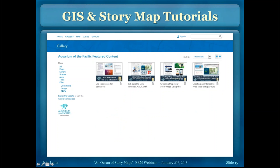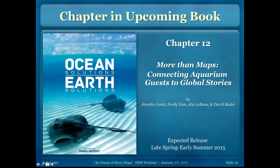In addition to these tutorials, as Don mentioned, we also contributed a chapter to the upcoming book Ocean Solutions Earth Solutions, which talks about how the aquarium is using GIS to engage the public in ocean science through the use of global stories — which we're doing through the story maps you saw here. The chapter talks about how informal science education is a really important way of reaching out to the public and that GIS linked to stories is a powerful tool to effectively communicate our message.